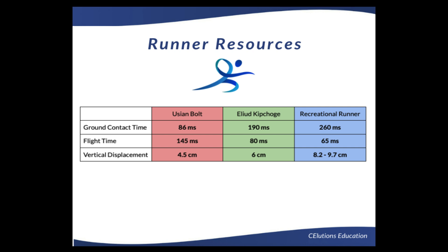As you can see from these numbers, Usain Bolt's ground contact time was 86 milliseconds. Eliud Kipchoge's was 190 milliseconds. And a recreational runner would be at 260 milliseconds. Flight times were 145 milliseconds for Usain Bolt, 80 milliseconds for Eliud Kipchoge, and a recreational runner would be at 65 milliseconds. Lastly, Usain Bolt's vertical displacement was 4.5 centimeters. Eliud Kipchoge was at 6 centimeters, and average runners are between 8.2 and 9.7 centimeters.